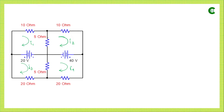These are our loop currents i1, i2, i3, i4 — my sequence is i1, i2, i4, i3, but we can take any sequence for this electrical circuit.